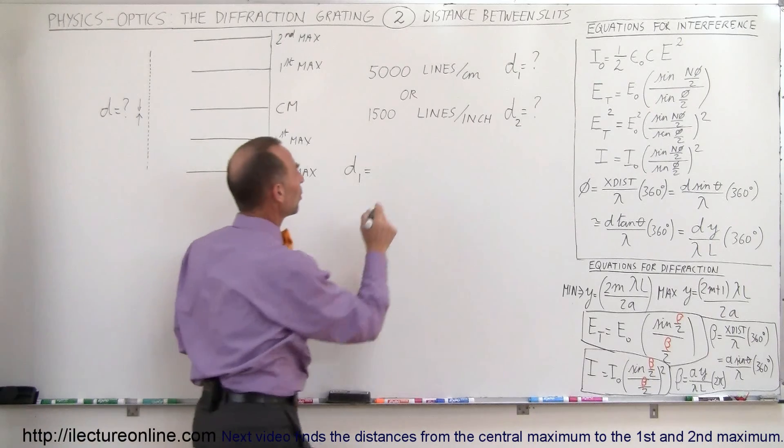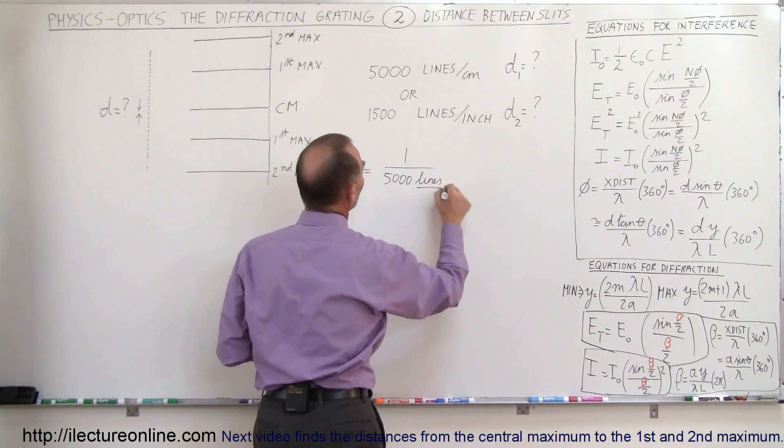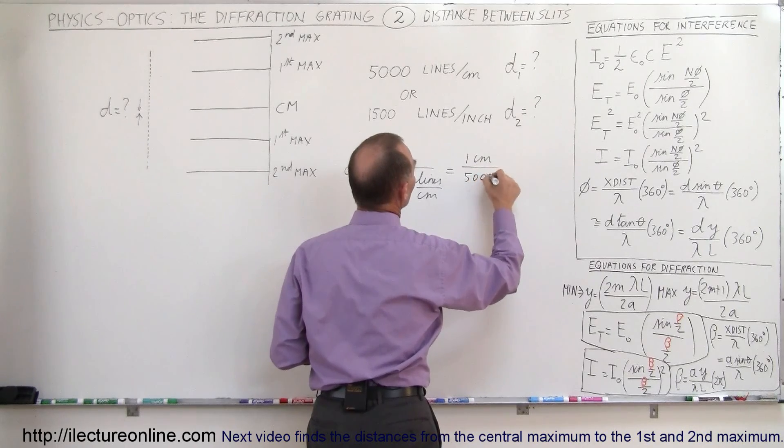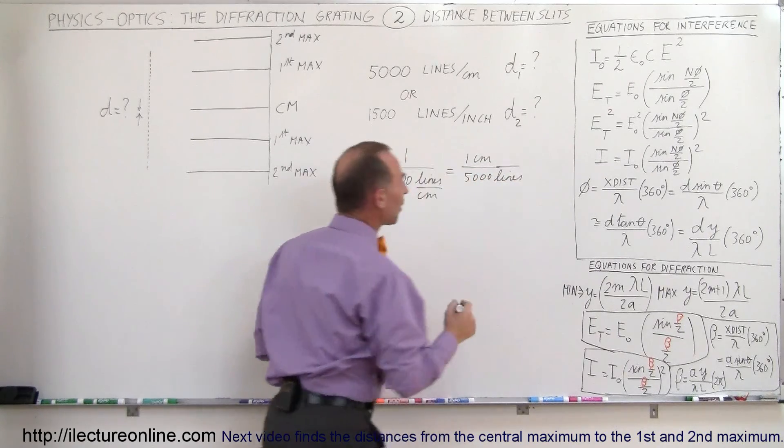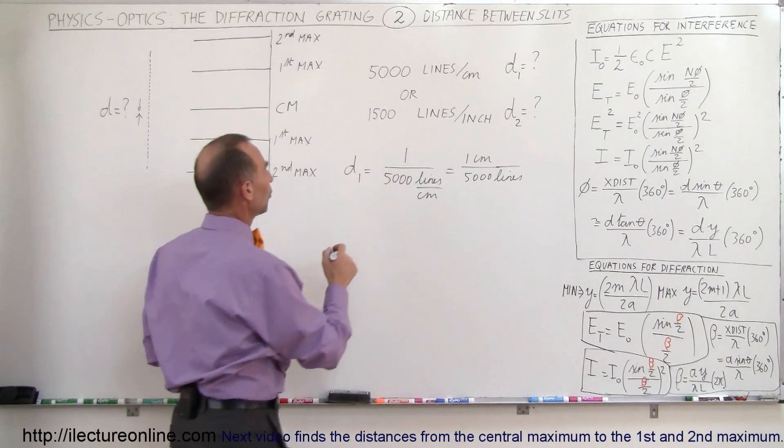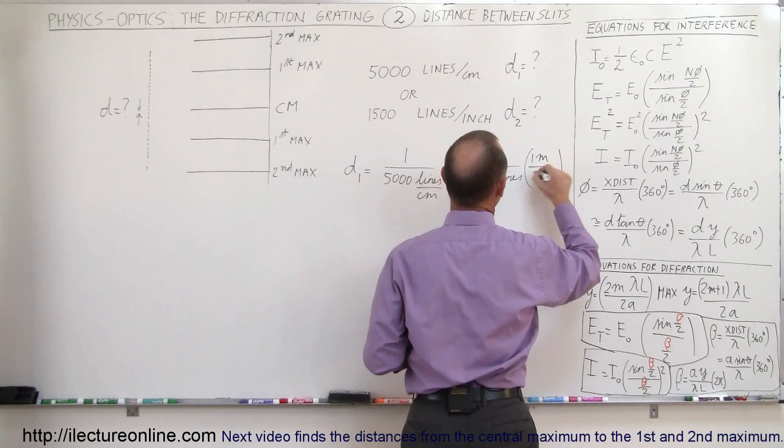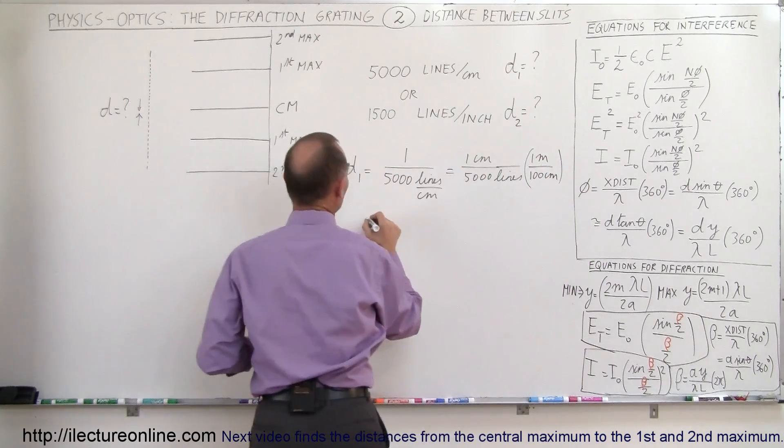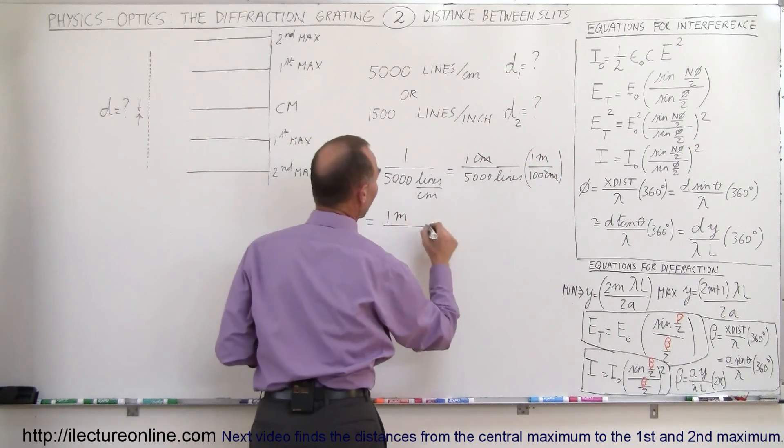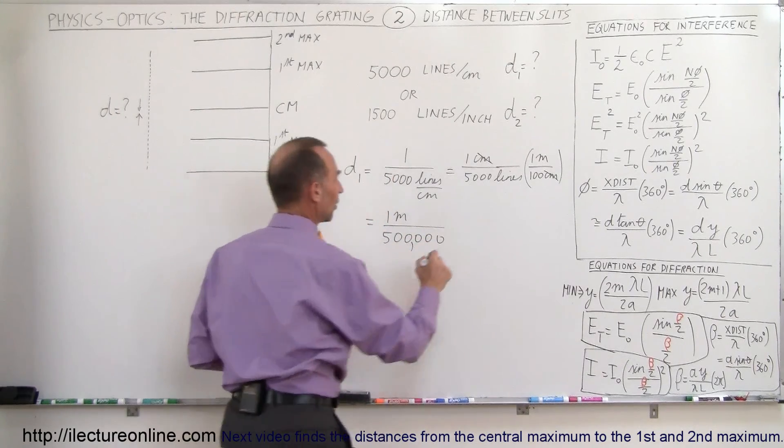So it would be 1 over 5,000 lines per centimeter which becomes 1 centimeter per 5,000 lines. And of course we want to convert that to meters per lines. So if we then multiply this times 1 meter divided by 100 centimeters, then this becomes equal to 1 meter because centimeters cancel out. So we get 1 meter in the numerator divided by 5,000 and two more zeros. That would be 500,000 lines.